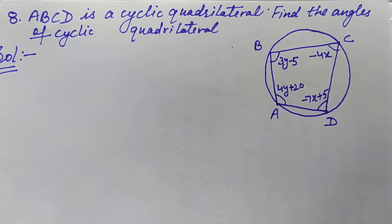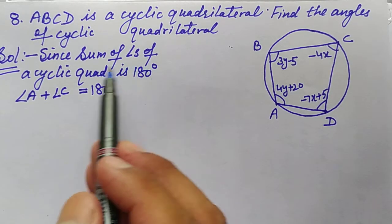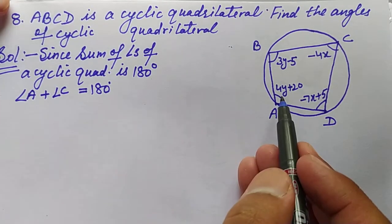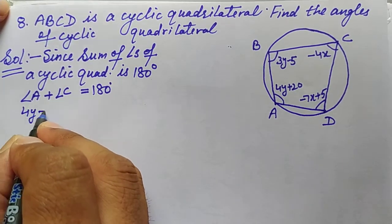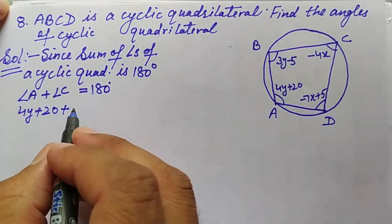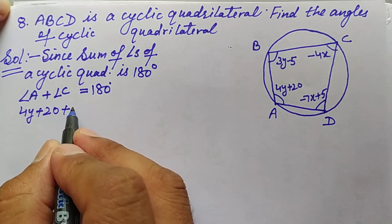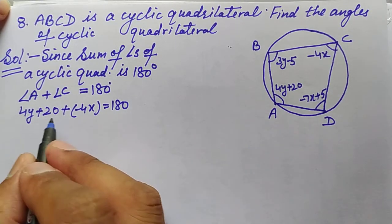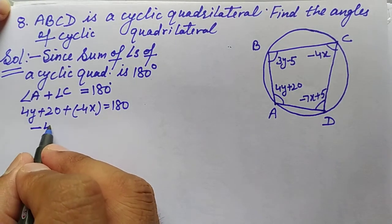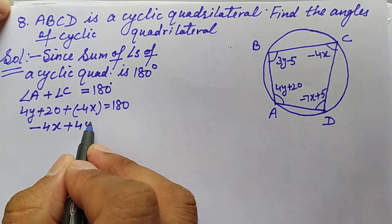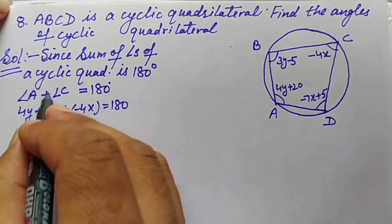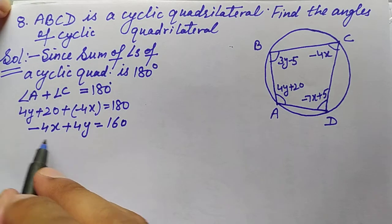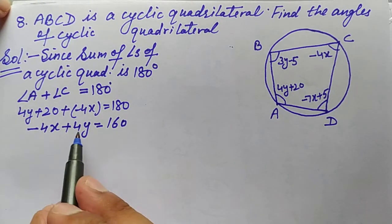Since the sum of opposite angles of a cyclic quadrilateral is 180°, angle A plus angle C equals 180°. Angle A is 4y + 20 and angle C is −4x, so we have −4x + 4y + 20 = 180. Moving 20 to the right-hand side gives −4x + 4y = 160. Dividing the entire equation by 4, since 4 is common on both sides.